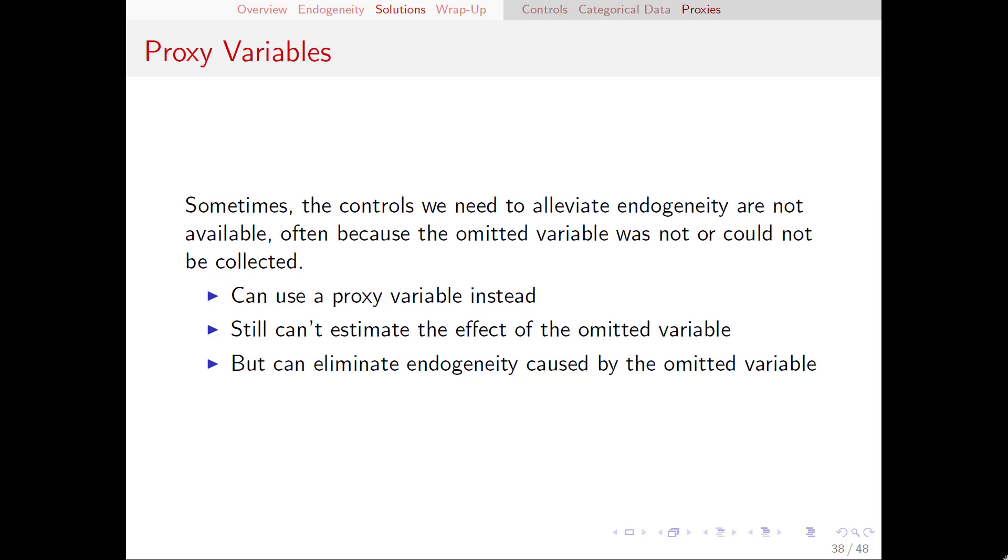This will be our final video on regression and at the end of the video I will wrap everything up as well. In the previous video we talked about using control variables in a regression. We discussed the ideal solution to the omitted variable problem being that we find all of the possible omitted variables and turn them into controls by putting them in the regression.